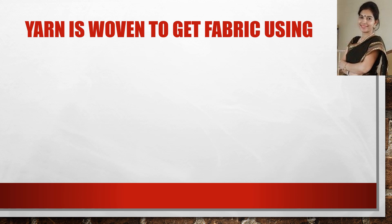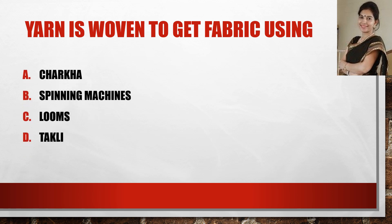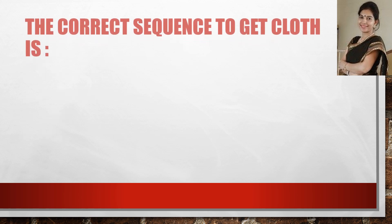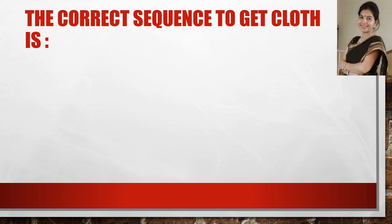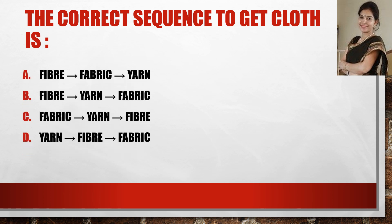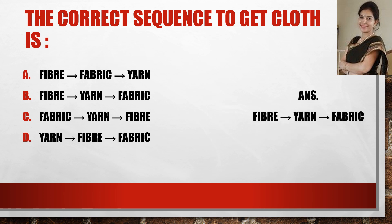Yarn is woven to get fabric using what? You have only 5 seconds, and the answer is looms. It can be a hand loom or a power loom. Next question: the correct sequence to get cloth is — and the answer is: fiber forms the yarn, yarn forms the fabric.